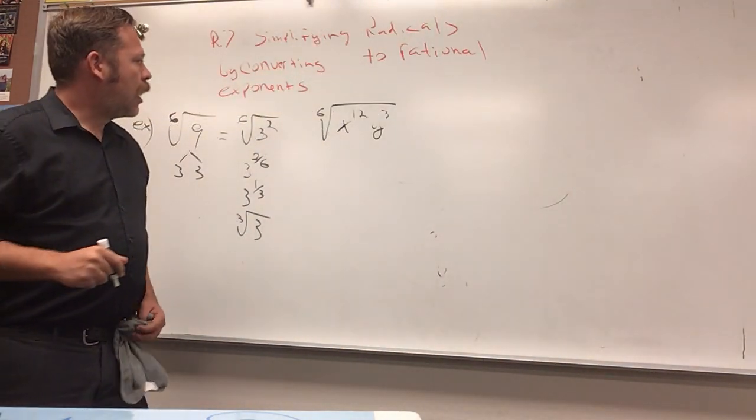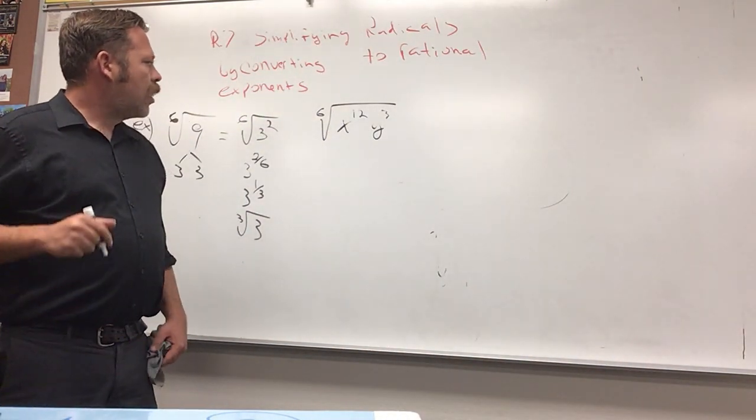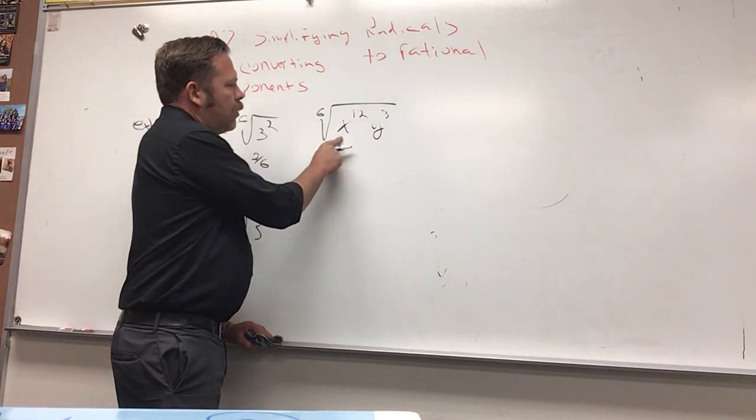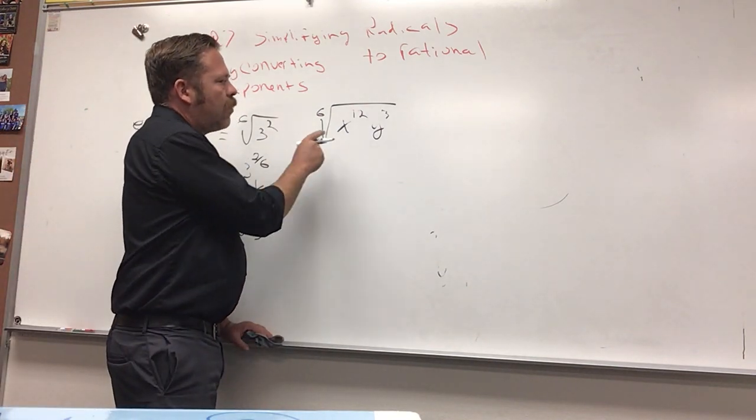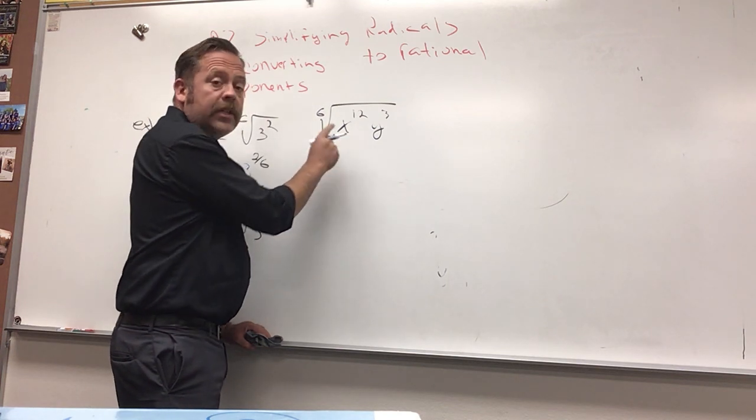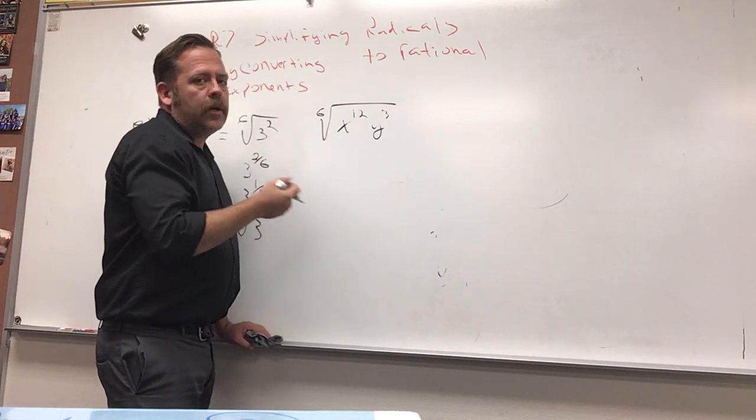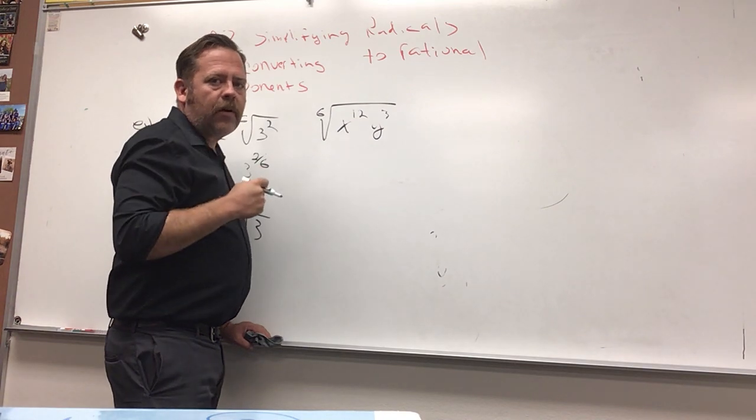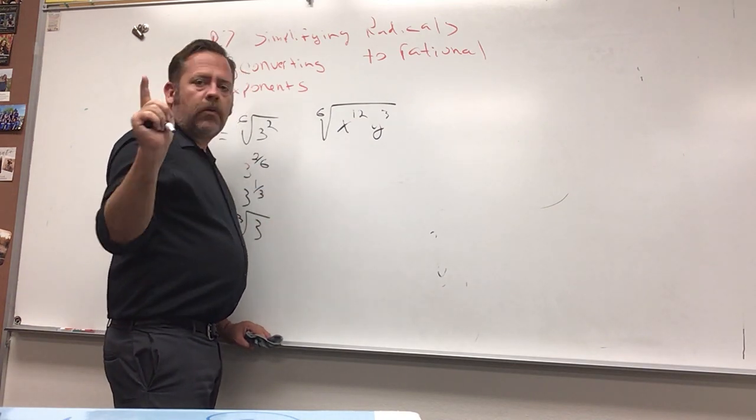Now, okay, so if we were to look for groups of six x's and you have x to the 12th, you could see there's going to be two of those groups. So, an x squared would come out. But there's more.